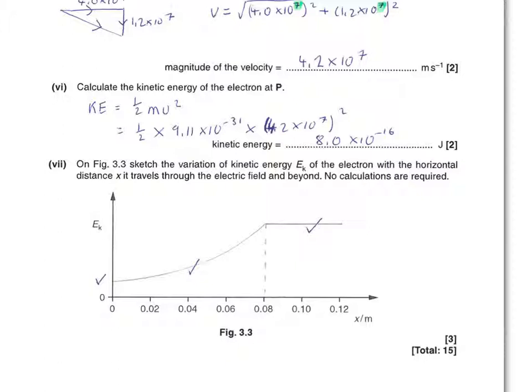Whilst the electron is within the plates, we know it experiences a force and an acceleration, so the velocity is increasing. The velocity is increasing uniformly, but remember, kinetic energy is proportional to velocity squared. That is the reason for this curved section of the graph. Finally, as the electron leaves the plates at 0.08 metres, it no longer experiences a force. Therefore, no acceleration, no change in velocity, and a constant value for kinetic energy.